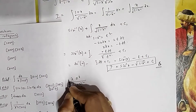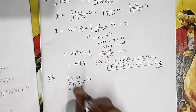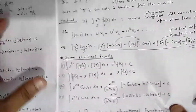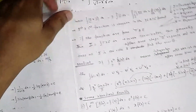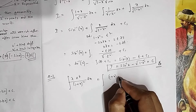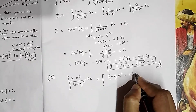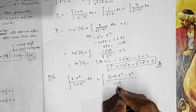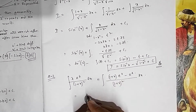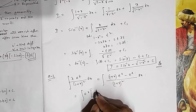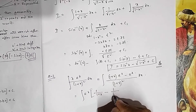In question number two: integrate x·eˣ/(1+x)² dx. Whenever there is eˣ times some function, the standard approach is to match the format eˣ[f(x) + f'(x)] = eˣ·f(x). To bring the numerator into that form, rewrite x as (1+x) − 1. Then eˣ·x/(1+x)² becomes eˣ[(1+x)/(1+x)² − 1/(1+x)²] = eˣ[1/(1+x) − 1/(1+x)²].